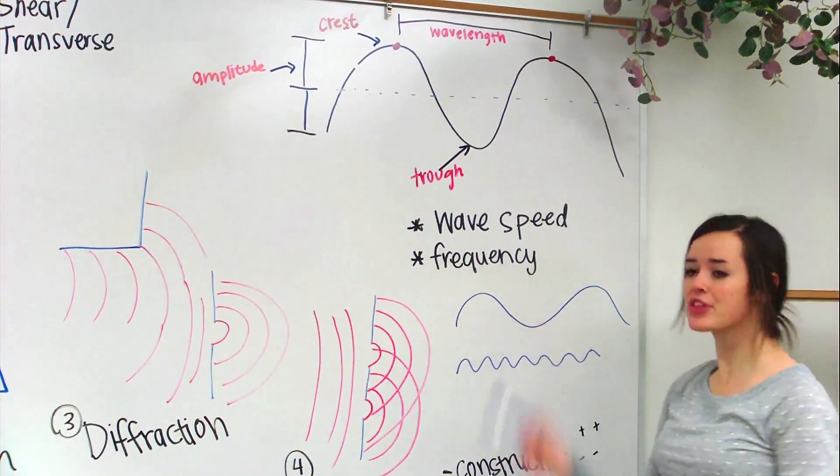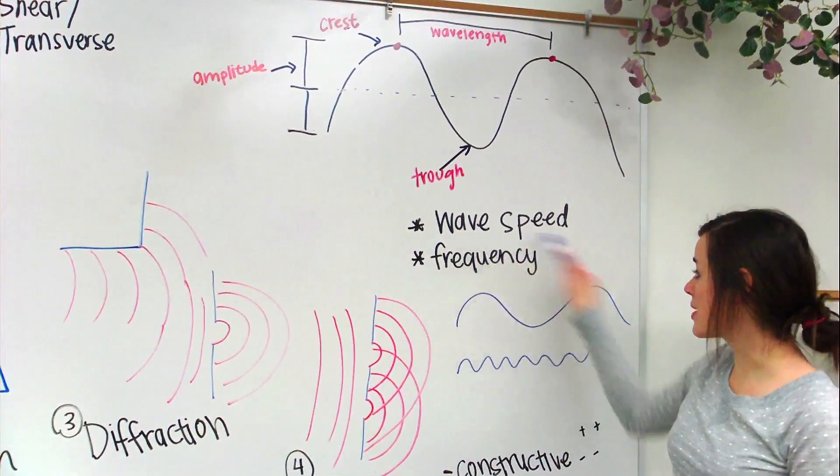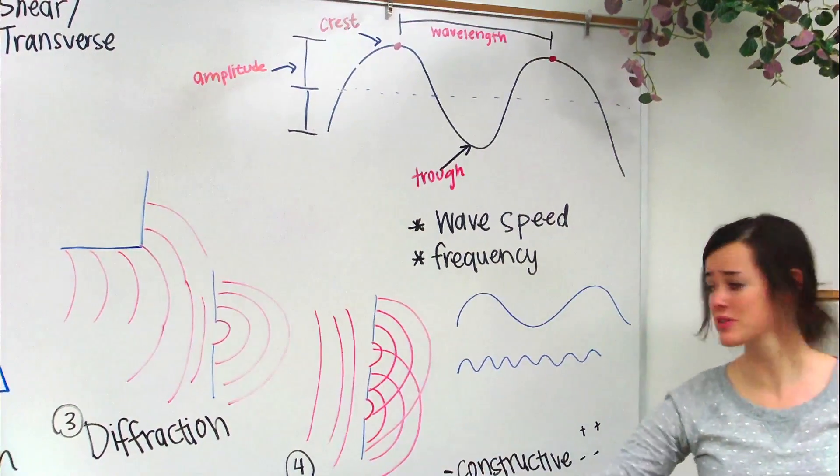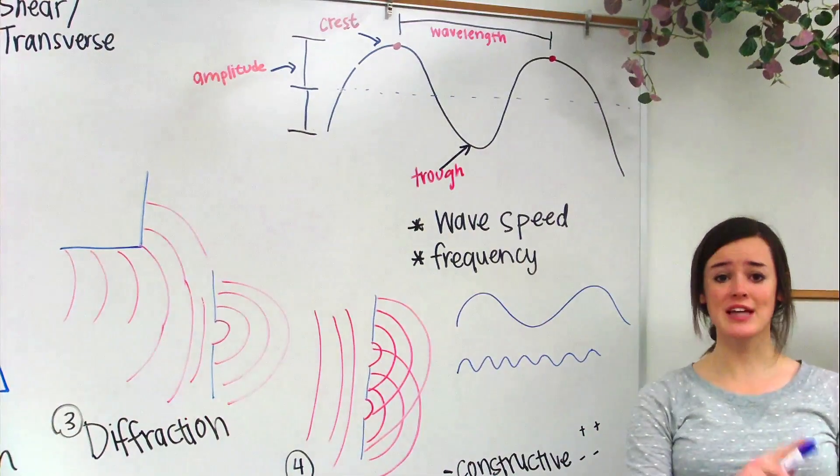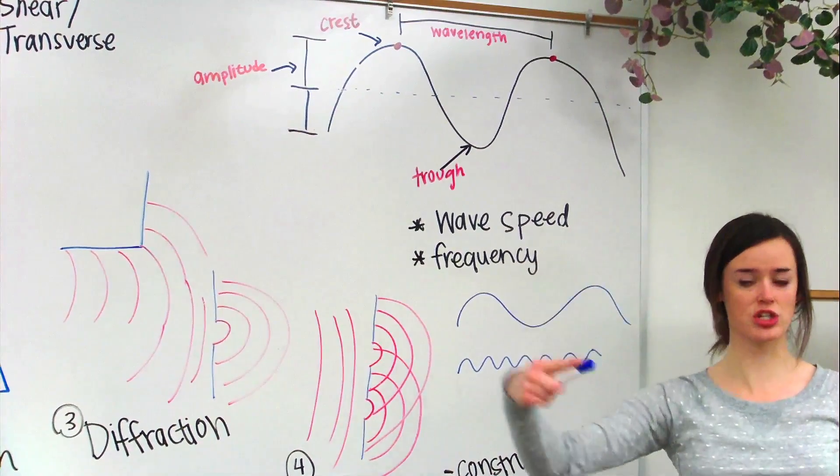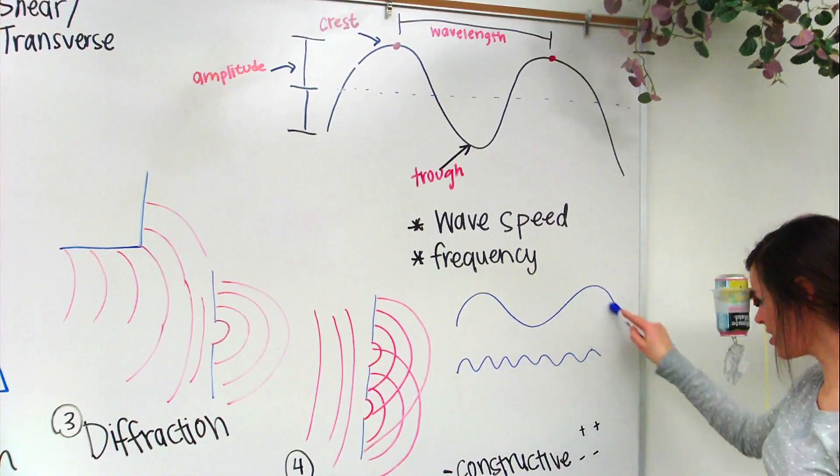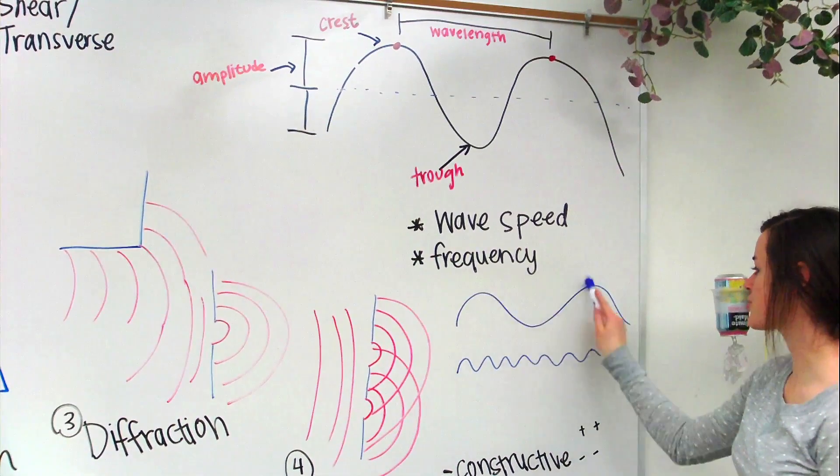So, there's a couple things I want to talk about. There's wave speed and frequency. Wave speed is just how fast the wave travels. And frequency is how many times a crest is going to pass a certain point. So, here we have a really big wavelength. These crests are spread out.